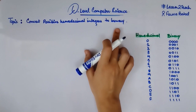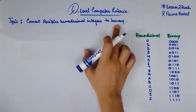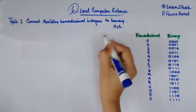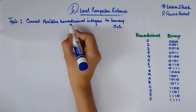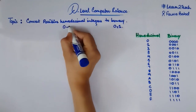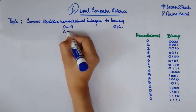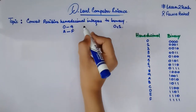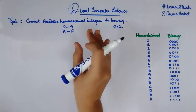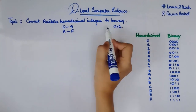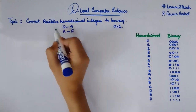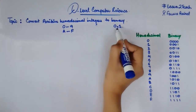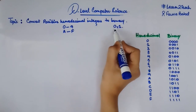We all know what a binary number is — any number that is in the form of zeros and ones is called a binary number. And any number that is in the form of 0 to 9 and A to F — we have 16 digits to represent a hexadecimal integer. So what we are going to do in this video is convert a hexadecimal integer into a binary one.